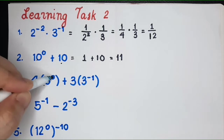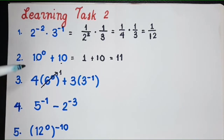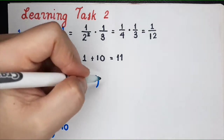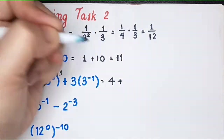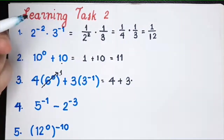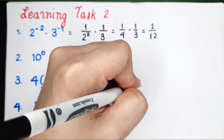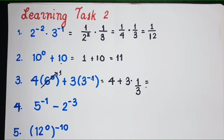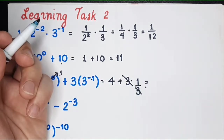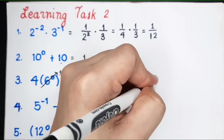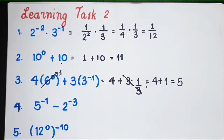For the next one, what is 6 raised to 0? It is 1. So we have 4 times 1, which gives 4. Then plus 3 times — how do you write 3 to the negative 1 without a negative exponent? It becomes 1 over 3. So the 3s cancel out, giving 4 plus 1, which equals 5.